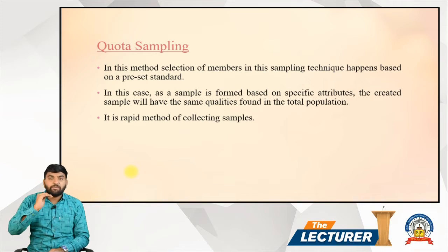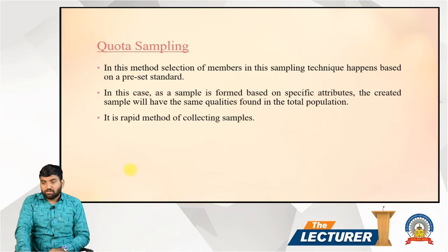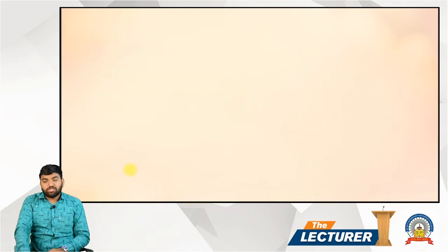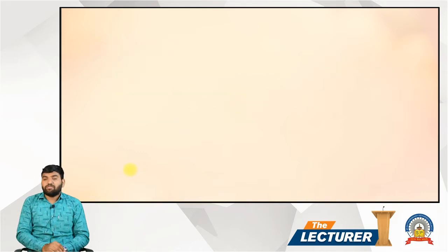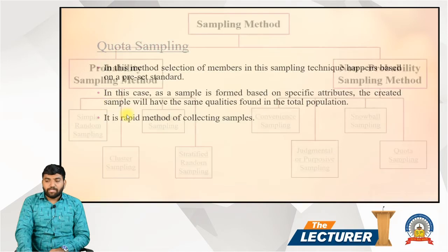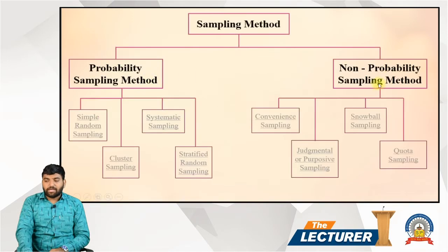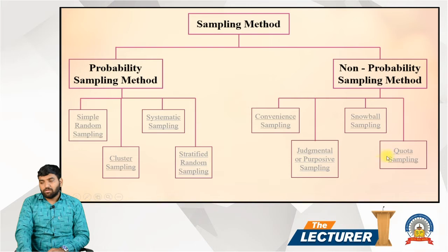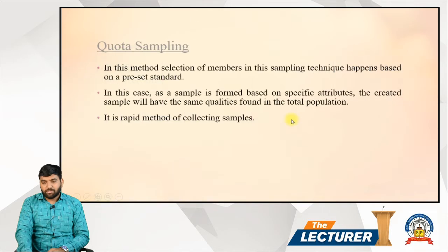So these are all the techniques of the sampling method. There are two types: probability sampling and non-probability sampling. Probability sampling has four different types, and non-probability sampling also has four different types.